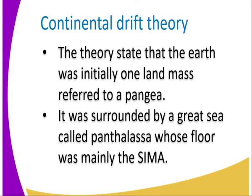This theory was brought up by Alfred Wegener. He said that the earth was initially one — there was one land mass, which was referred to as Pangea. This one land mass was surrounded by a great sea, which was referred to as Panthalassa.